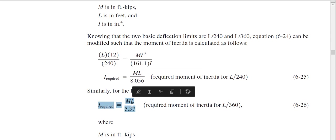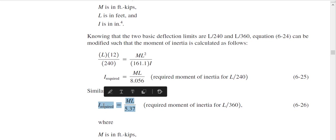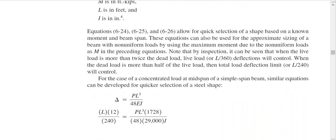With these formulas we can easily design the beam for deflection. When we design a beam we first determine the maximum moment, and the span is typically already known. Once we know the maximum moment and span, we can find I_required and select a section with I greater than or equal to that value. The same approach applies for a concentrated load at mid-span — whatever we discussed was for uniformly distributed load, but a parallel derivation exists for the concentrated load case.